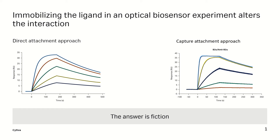There are also two main approaches to attaching a ligand to the surface. On the right-hand side of this slide, you can see capture, where researchers capture and orientate the ligand on the surface using an affinity tag, like a HIS tag, biotin tag, or an Fc. It's a non-covalent approach and it's generally reversible, with streptavidin and biotin being the notable exception.